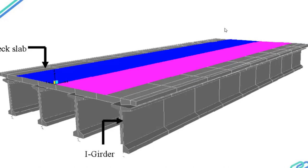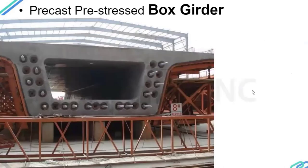Here we see a precast prestressed box girder, one of the superstructure types widely used in metro construction. It is a closed rectangular section that is prestressed. For wide deck sections where significant torsion moments act on the structure, this type is used because it effectively takes care of induced torsion and can mitigate those torsion effects without causing undue cracking or harm to the structure.